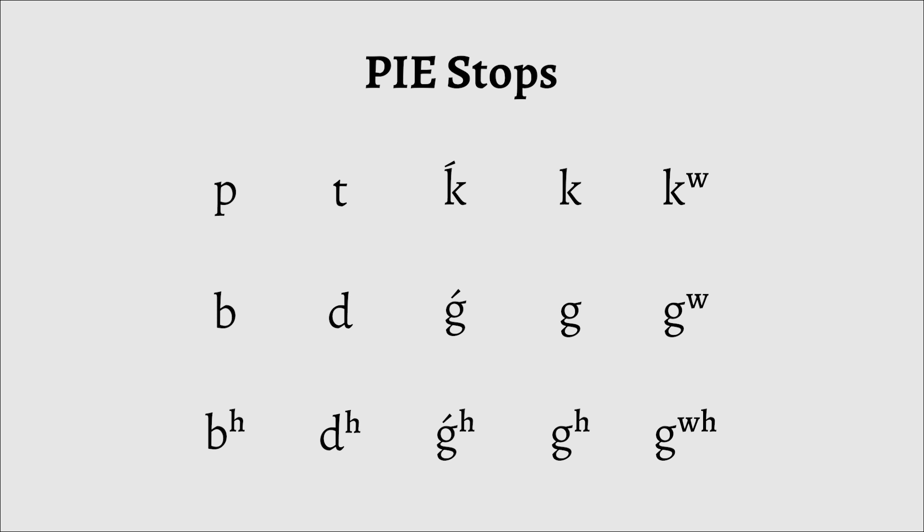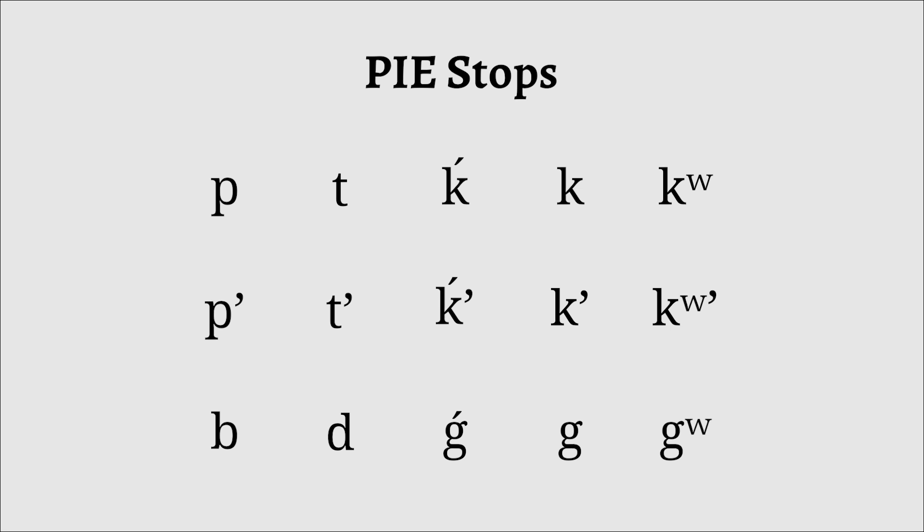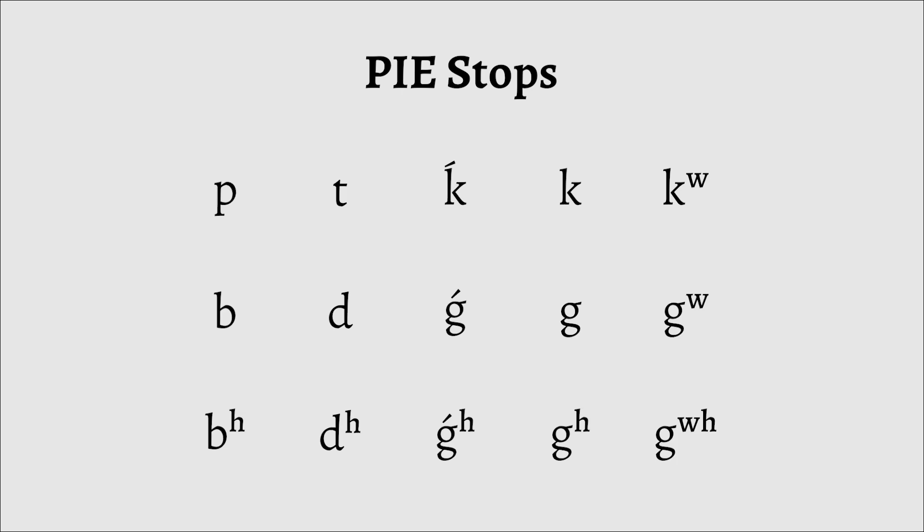The exact types of phonation are contested to an extent, with one theory positing that PIE had a glottic arrangement, but that theory seems to have lost a lot of steam and most people have once again settled on these three phonation types.